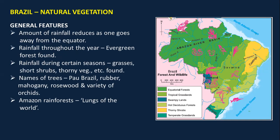An important point to remember: unlike India where we were given particular information about each type of forest, for Brazil we have been given general features. The amount of rainfall in Brazil reduces as one goes away from the equator. Rainfall throughout the year is present in the evergreen forests, and during certain seasons grasses, shrubs, and thorny vegetation are found. During the rainfall season you will find growth of grasses and short shrubs.